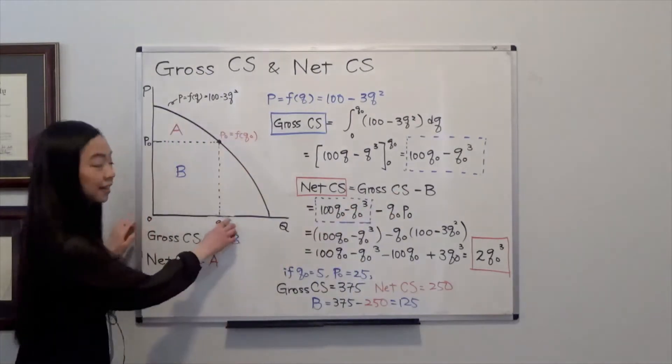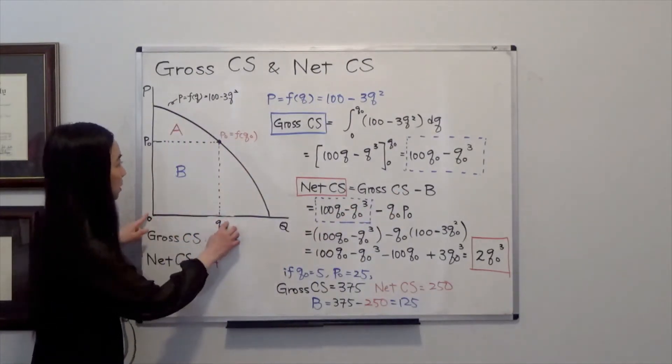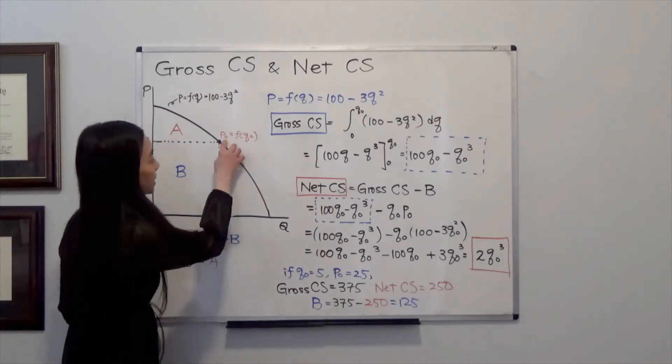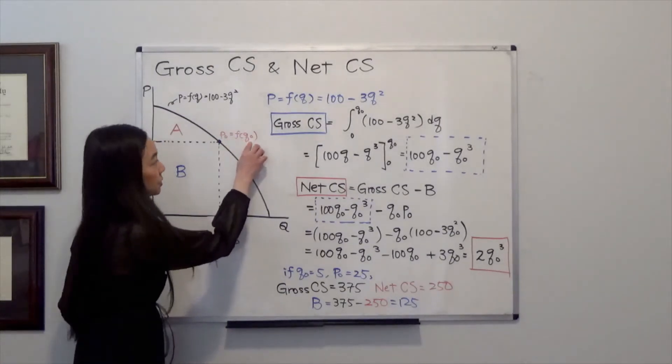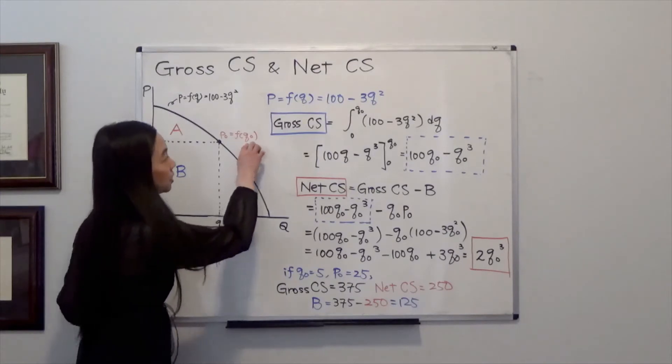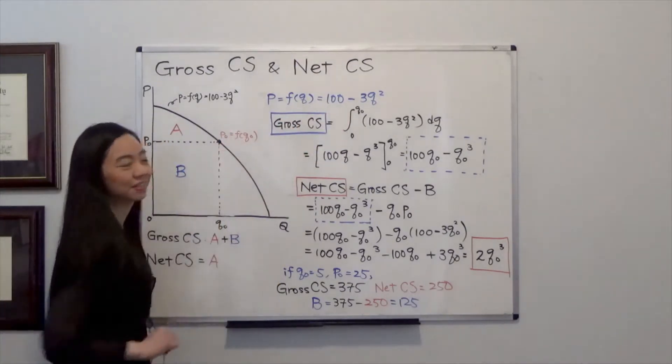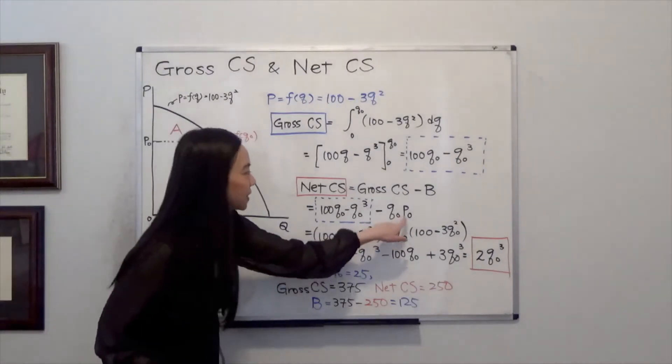You can see graphically B is just Q0 times P0. But what is P0? P0 is a function of Q0. So we're just plugging Q0 into this inverse demand function, then we'll be able to find P0.